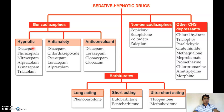Examples of benzodiazepine hypnotics are Diazepam, Flurazepam, Nitrazepam, Alprazolam, Temazepam, and Triazolam. Examples of anti-anxiety benzodiazepines are Diazepam, Chlordiazepoxide, Oxazepam, Lorazepam, and Alprazolam.